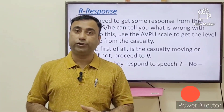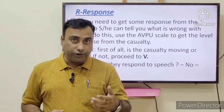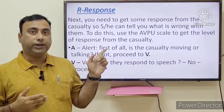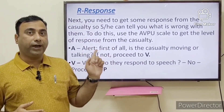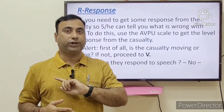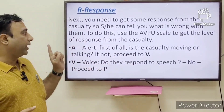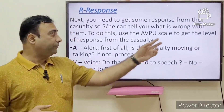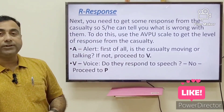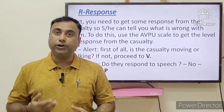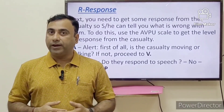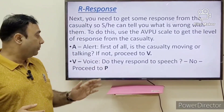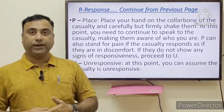Once you have ensured there is no potential danger, start approaching the casualty. R is for Response — how the casualty is responding. For this we use the AVPU scale. A is for Alert: check if the casualty is moving their legs, hands, or any part of the body. If not, proceed to V — Voice: check if the casualty is responding to your voice, for example asking 'Hey, how are you? Are you listening to me?'